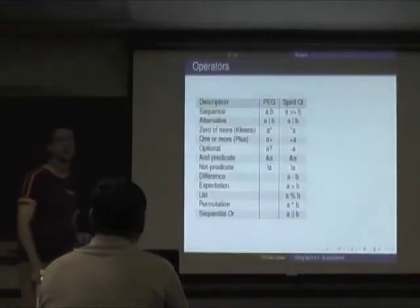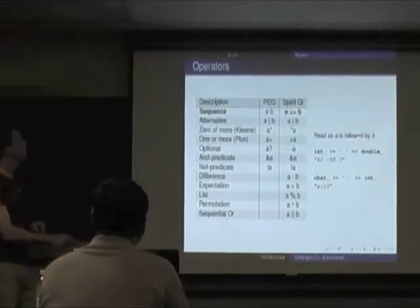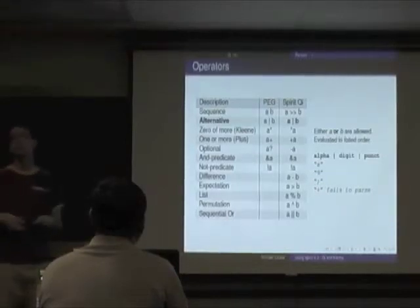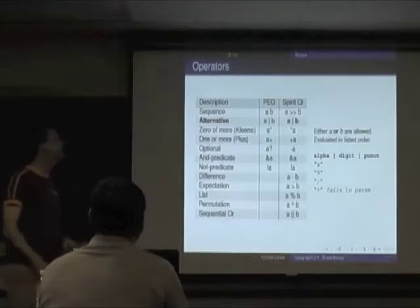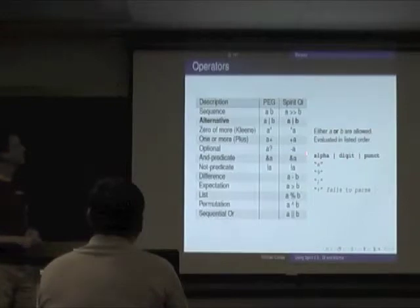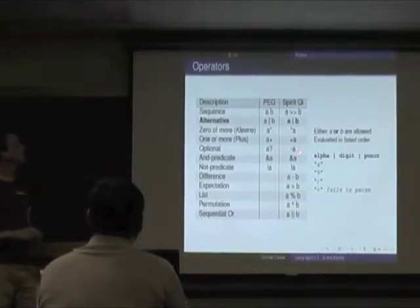There are a bunch of operators. Sequence: integer followed by space followed by double; or character followed by colon followed by integer. Alternative means parse A or parse B, evaluated in order — so alpha or digit or punctuation: the first three parse fine, but plus doesn't match any of those so it fails. They're evaluated in order: alpha, then digit, then punctuation.